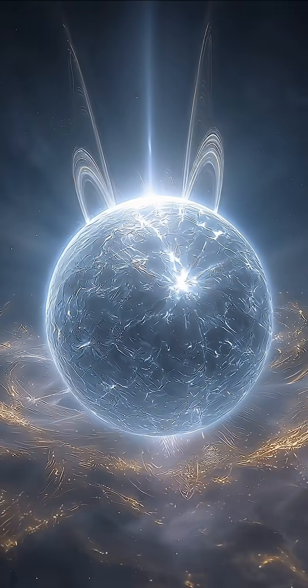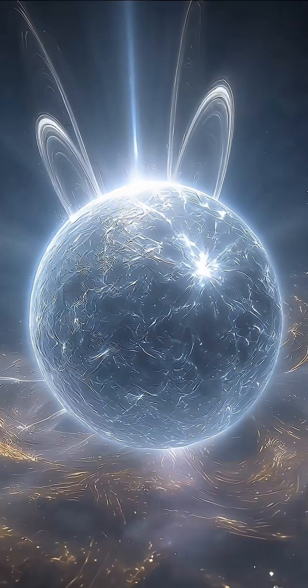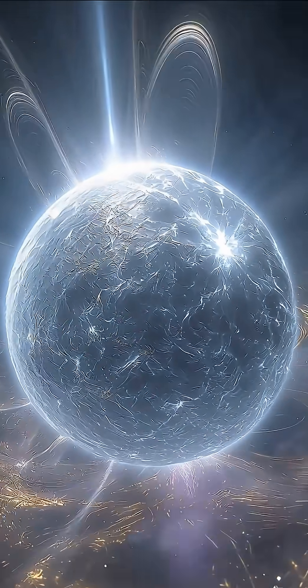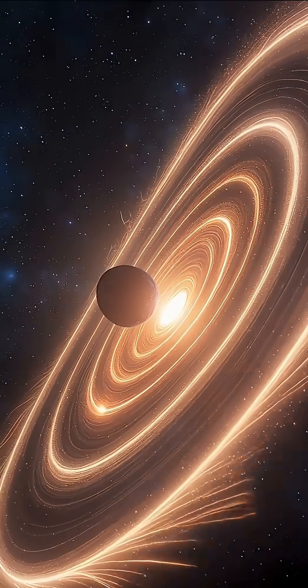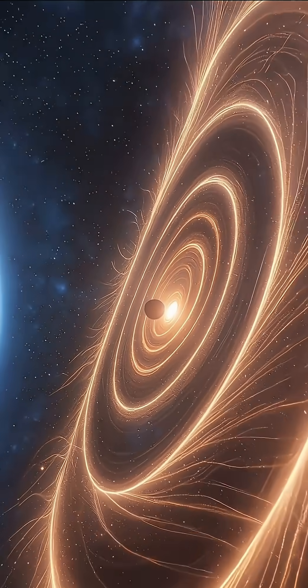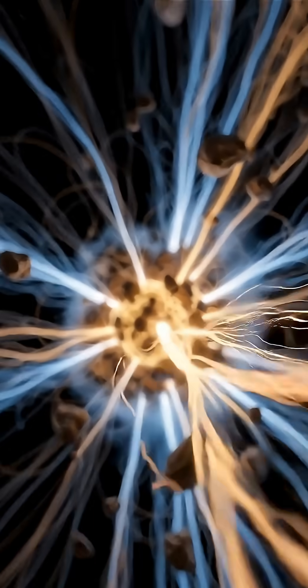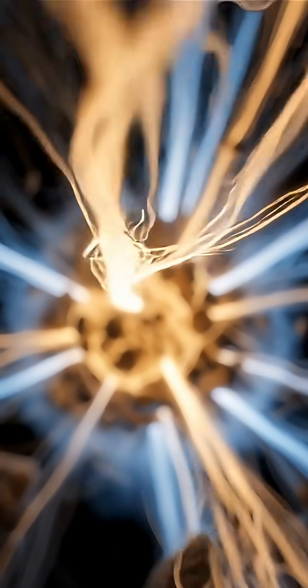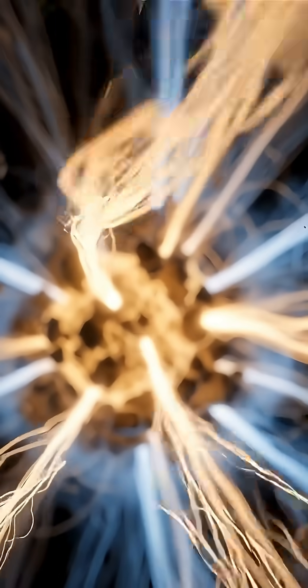A magnetar is a collapsed star with magnetic power beyond human imagination. Its magnetic field is trillions of times stronger than Earth's entire magnetosphere. Close enough, it can rip atoms apart by violently twisting their particles.